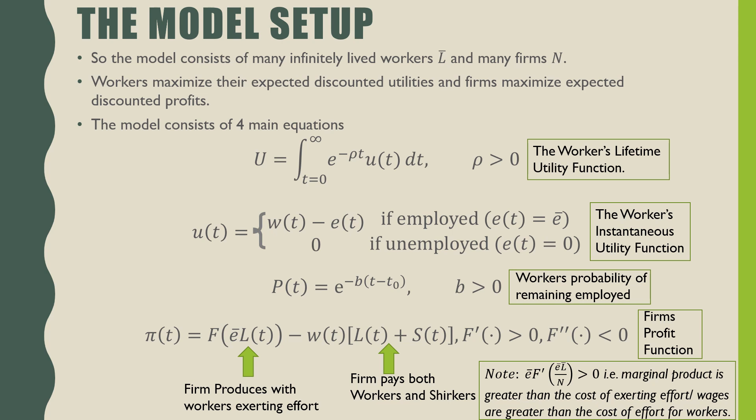Mathematically speaking, we have to think about four different equations. We have our worker's lifetime utility function, which is the integral of e raised to the power of negative rho t times little u(t), which is our worker's instantaneous utility function, where t goes from zero to infinity. The instantaneous utility function really depends on whether our worker is employed or unemployed. If they are employed, the instantaneous utility is the wage the worker receives at time t minus the effort they put in at time t.